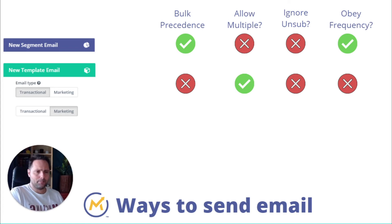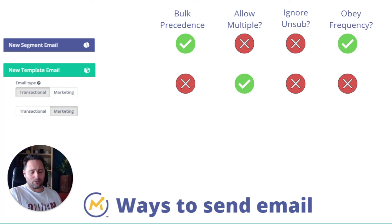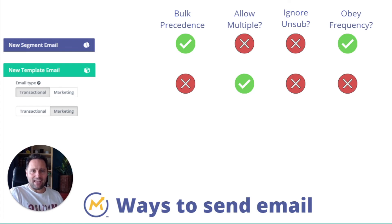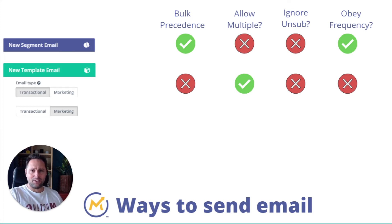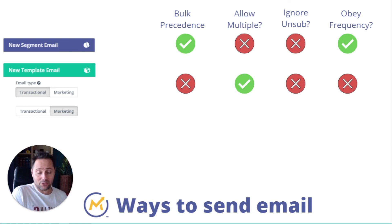However, transactional campaign emails do not obey frequency. So if you set a limit of three emails per day, a transactional email will be delivered regardless — even 100 times. This makes it very easy to accidentally set a loop in your campaign where the same email fires over and over. If it's set to transactional, it won't obey the frequency and you can actually spam someone multiple times if you set it up wrong.